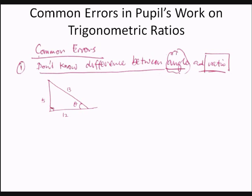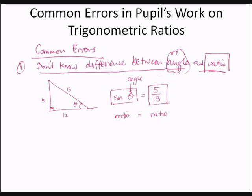For example, here we have a right angle triangle with angle theta, hypotenuse of 13 units, and the other two sides of 5 and 12 units respectively. The sine of angle theta would be opposite side over hypotenuse, that is 5 over 13. Sine theta is a ratio, and 5 over 13 is a ratio.